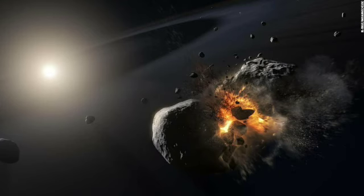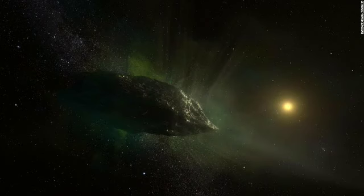This shows the collision of two 125-mile-wide icy, dusty bodies orbiting the bright star Fomalhaut. Located 25 light-years away, the observation of the aftermath of this collision was once thought to be an exoplanet.